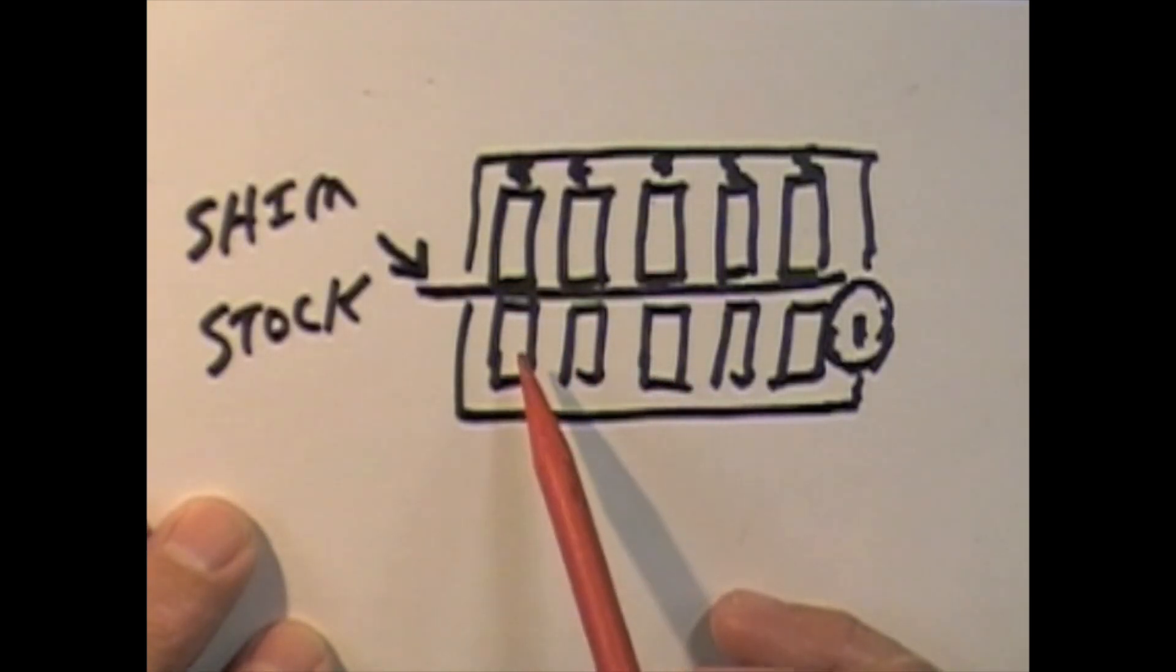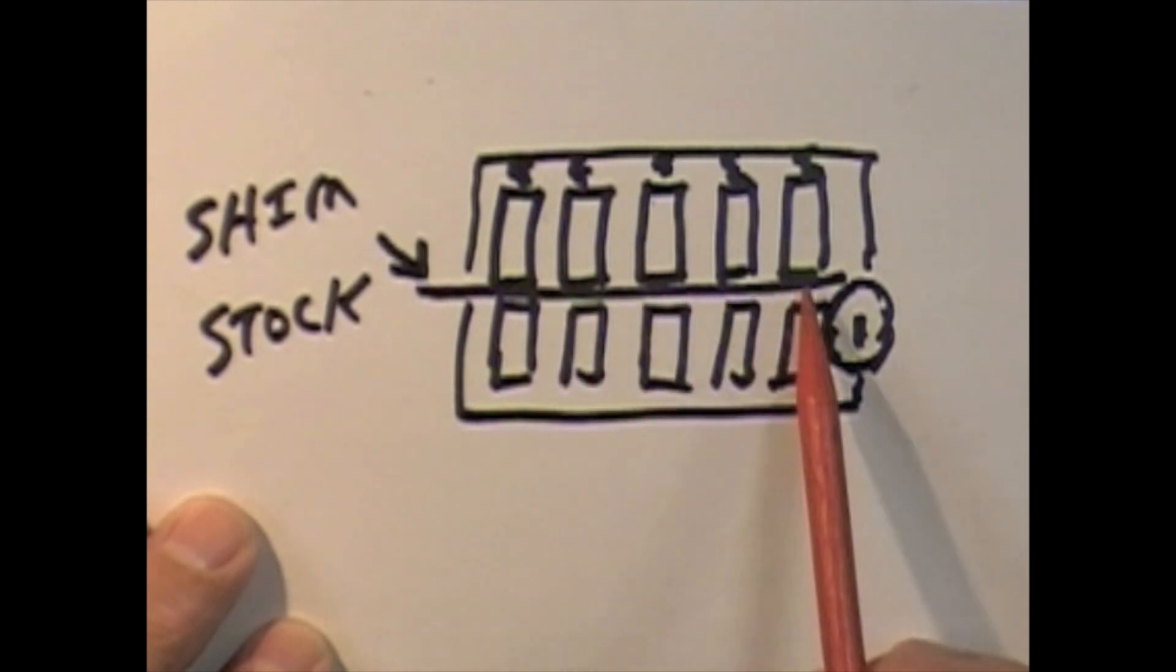So that once we get all five of the bottom pins picked up to where the shim stock can slide in between the top pin and the bottom pin, we'll create a shear line with all of the pin stacks.